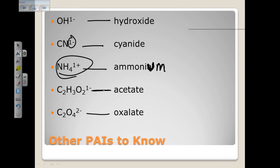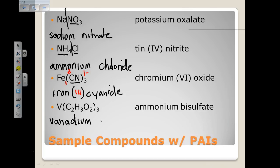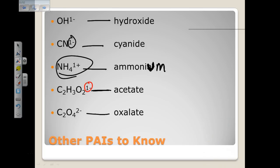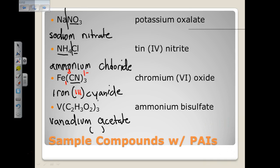For vanadium acetate: vanadium is the cation and acetate is one of the ions we memorized. Since vanadium is a transition metal, we need to put the charge in parentheses. Acetate has a charge of one minus; there are three acetates, so the total is three minus. There is one vanadium, so vanadium must be three plus: vanadium(III) acetate.